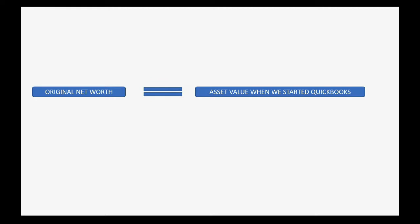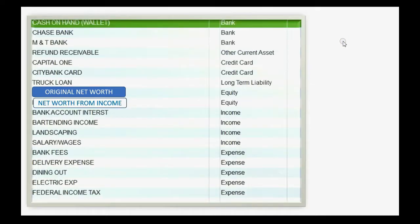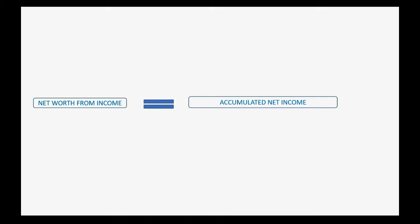Original net worth equals the value of the assets minus the liabilities at the moment you started using QuickBooks. The only issue is that assets were saved for the end of this course. Net worth from income means that all of the prior years' net income — accumulated net income — will show in that one number after you started using QuickBooks. And that's how you manage net worth for a person, an estate, or a trust.